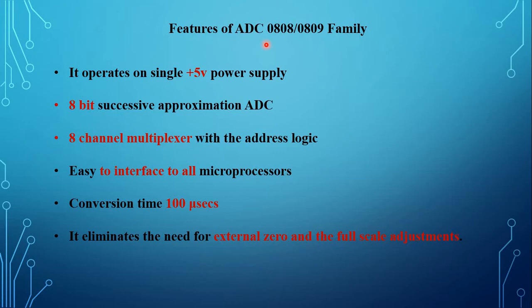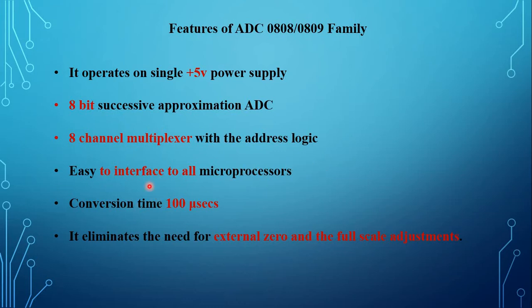This slide shows the features of ADC 0808 or 0809 family. This IC operates on a plus 5 volt power supply. It is an 8-bit successive approximation ADC. It has an 8-channel multiplexer with address logic. It is easy to interface to all microprocessors. Its conversion time is 100 microseconds. It eliminates the need for external zero and full scale adjustments.